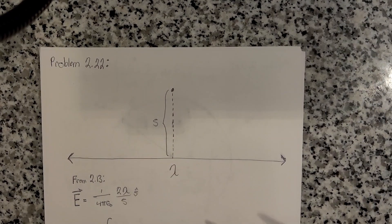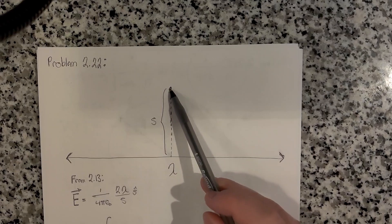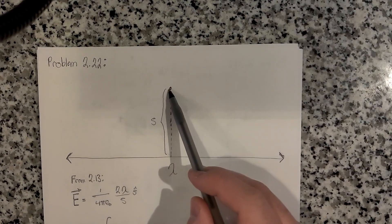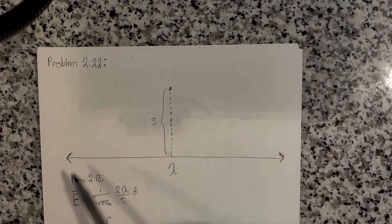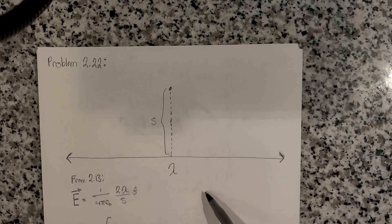The problem asks us to find the potential at a point, a distance s, from an infinitely long straight wire that contains a uniform line charge of lambda.